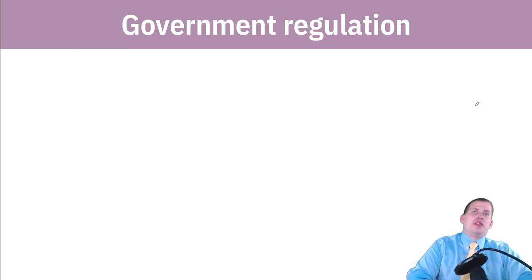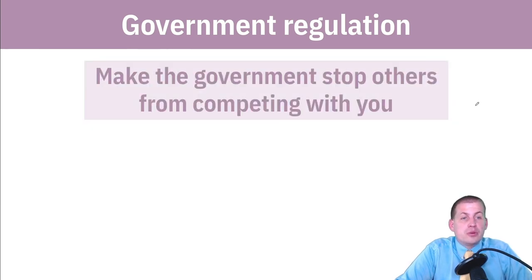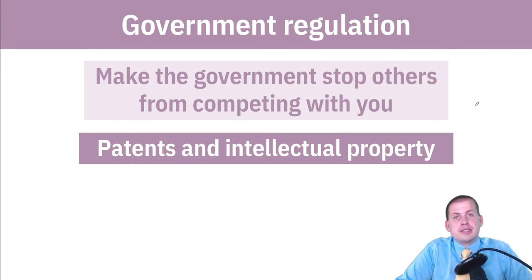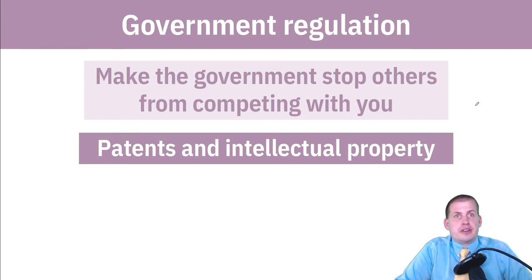The most interesting way of gaining market power for our purposes is using government regulation to enhance it. If you can use the government to stop other people from competing with you, that's great for you — and sometimes this is good. Patents essentially give an inventor a monopoly over what they create, and intellectual property copyright gives the creator a monopoly over their song or work. That encourages innovation because people want to create things, get patents on them, and profit from them. Then those patents expire, and we like that.